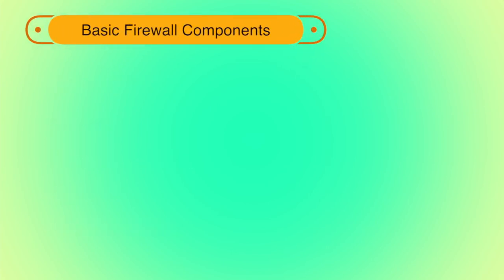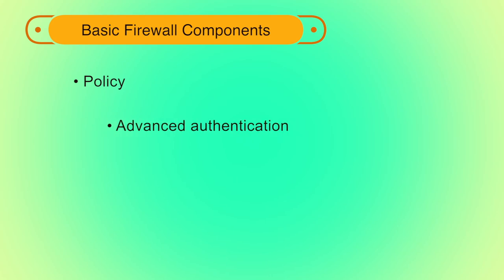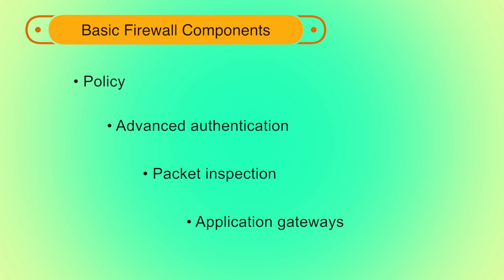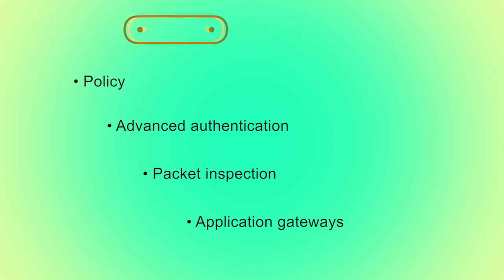The basic components of a firewall comprise: policy, advanced authentication, packet inspection, and application gateways. Just purchasing a good firewall is not sufficient — one must configure it properly with security objectives in mind.